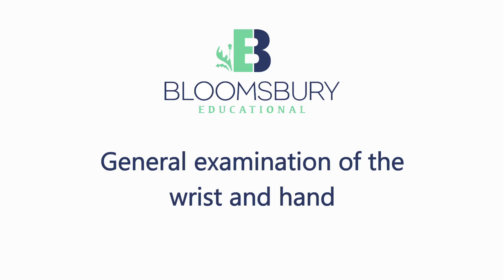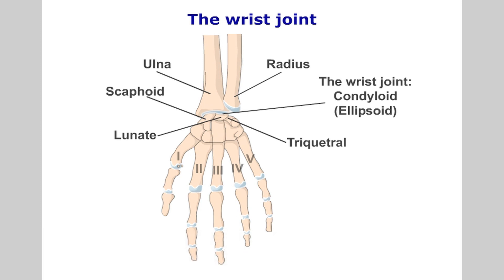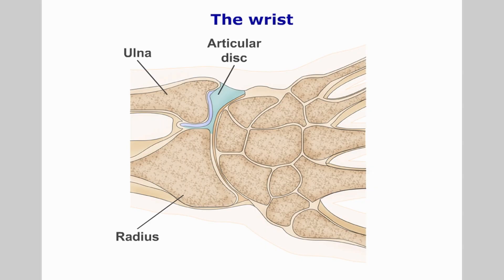The wrist is a synovial condyloid joint formed from the distal radius, the distal ulnar and the proximal carpal row, which is made up of the scaphoid, lunate and triquitral. In addition, a stabilizing triangular articular disc sits between the distal radius and ulnar and the proximal carpal row.